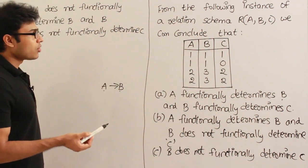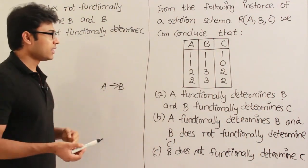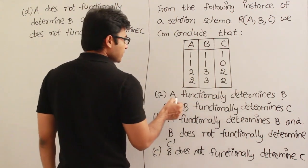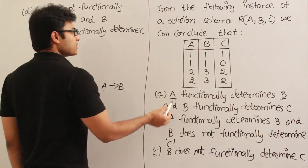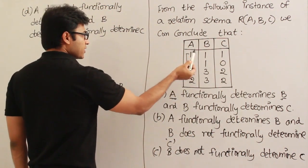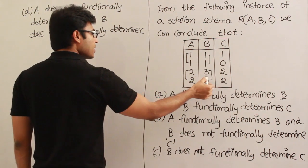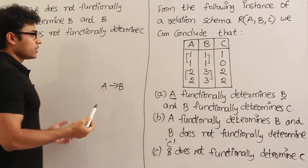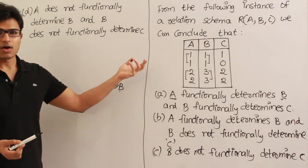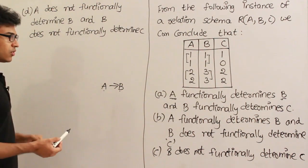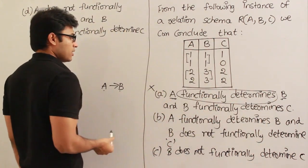It might hold true for this particular instance but I cannot apply this on the entire database. For example, if I am saying A determines B, for a given value of A there should be a unique B value. Now if there are any repetitions in A, B should be same. See, there is repetition in A and what about B? It is same. Therefore on this instance it is looking like it is right, but I cannot say this for every instance of this particular relation or on the entire database as a whole. Concluding this is not true.